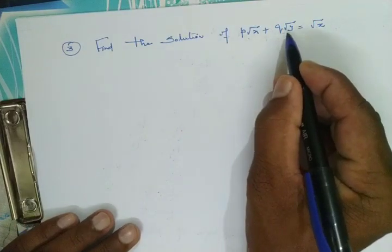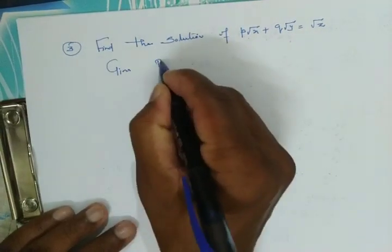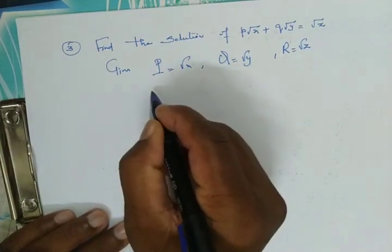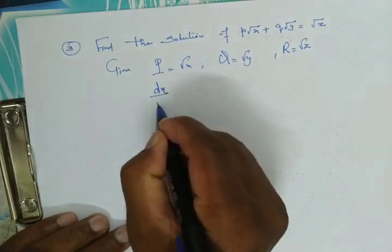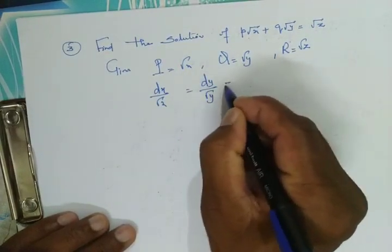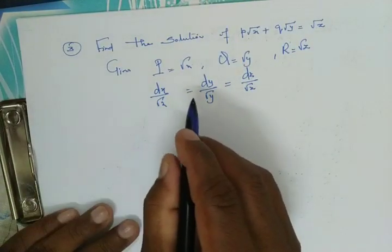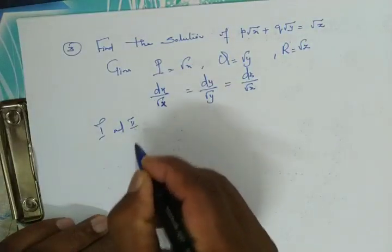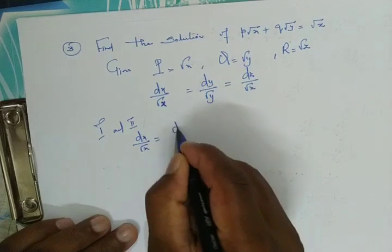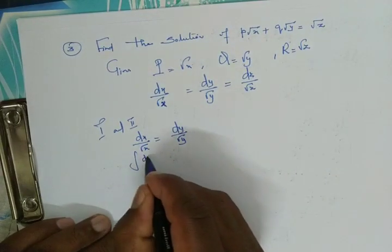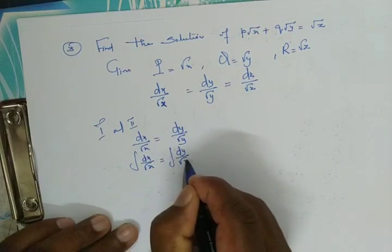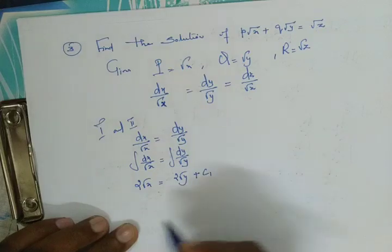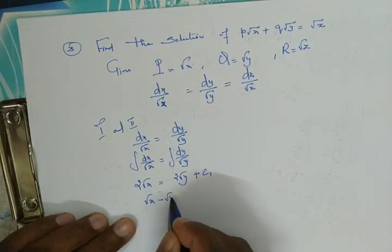Solve p√x + q√y = √z. The given problem has capital P = √x, capital Q = √y, and capital R = √z. First we form the auxiliary equation: dx/√x = dy/√y = dz/√z. Considering the first and second fractions, dx/√x = dy/√y. Integrating both sides: integration of 1/√x gives 2√x, and integration of 1/√y gives 2√y plus c₁. Cancelling 2 from both sides gives √x − √y = c₁.